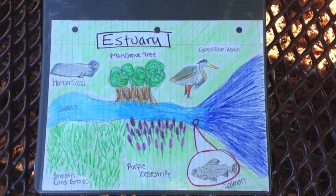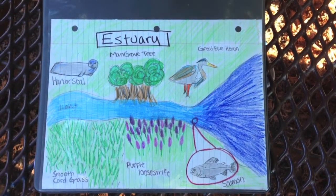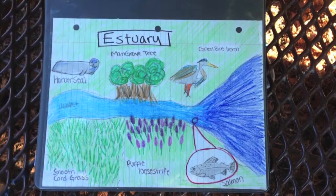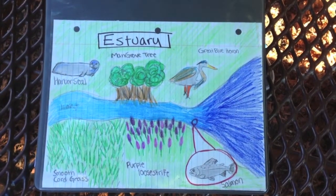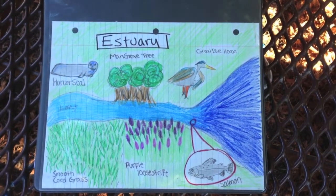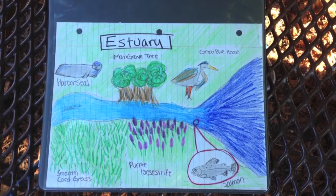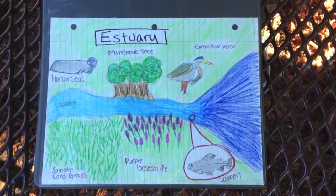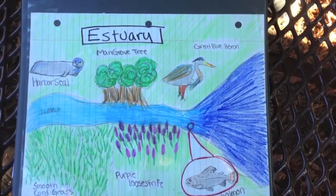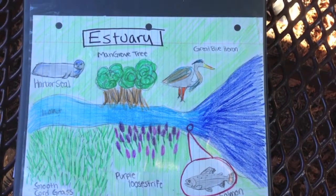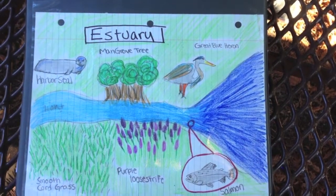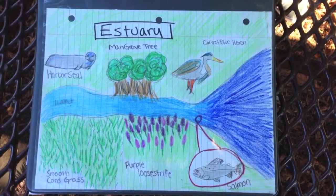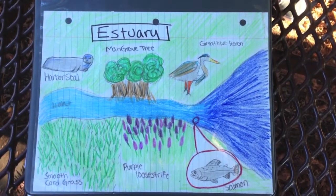Three animal species found in an estuary are the great blue heron, the harbor seal, and the salmon. These animals also must be able to sustain a wide range of salinities in the water. The plants and animals that can tolerate this wide range of salinities are called euryhaline and are most often found in the brackish waters of the estuary.